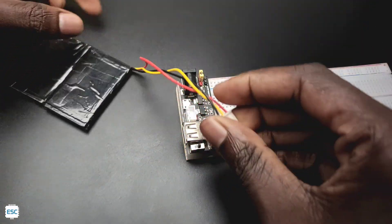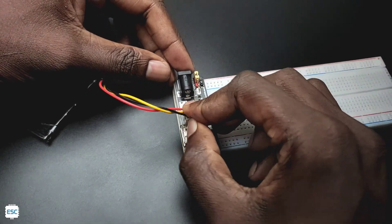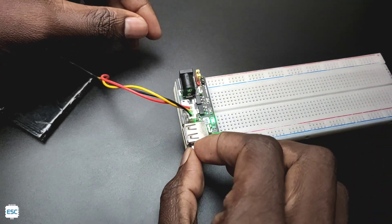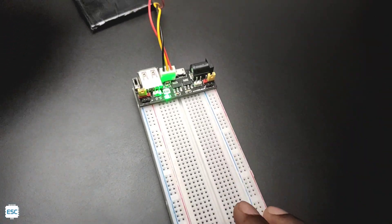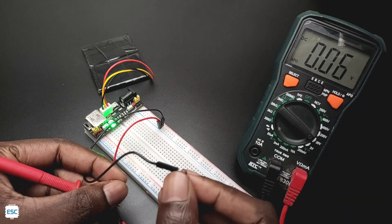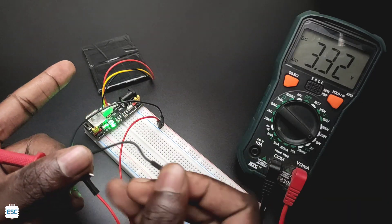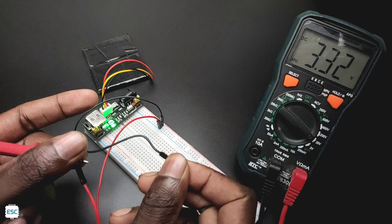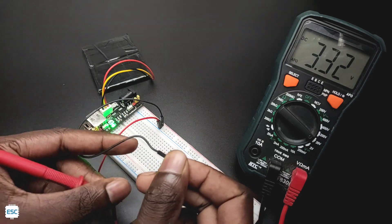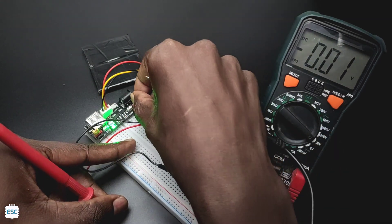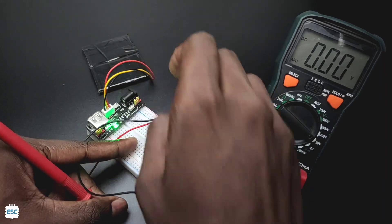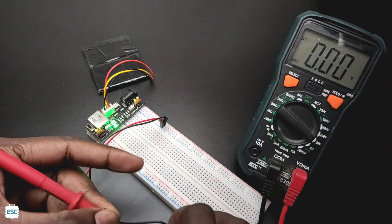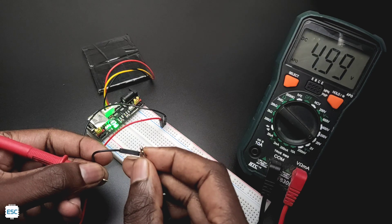Now, I connected a 7.4V battery to this supply. Now let's check the output. As you can see, the voltage is 3.3V. And now I changed the connector and the voltage becomes 5V.